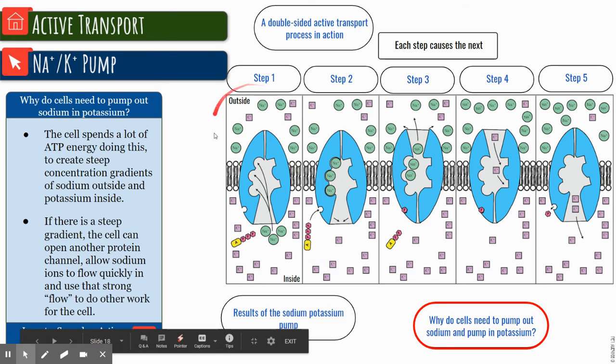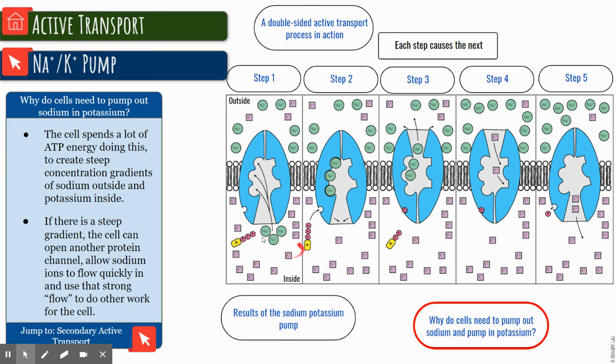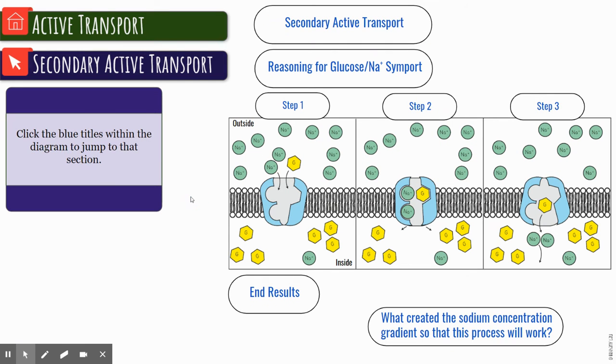So you have what we call a membrane potential, a difference in charge from one side to another. That allows for the nerves to have the nerve impulse go down the axon of a nerve.